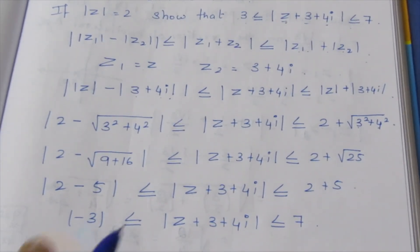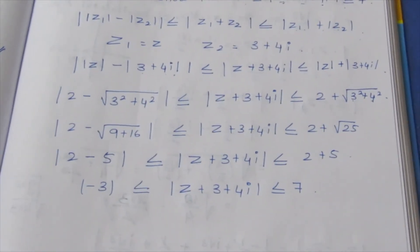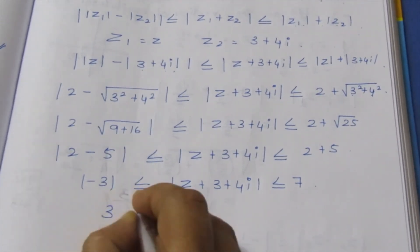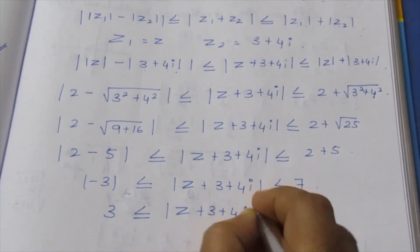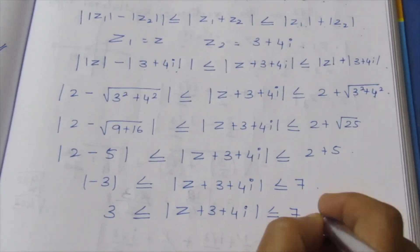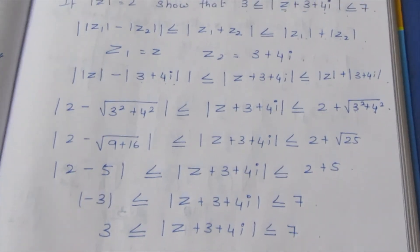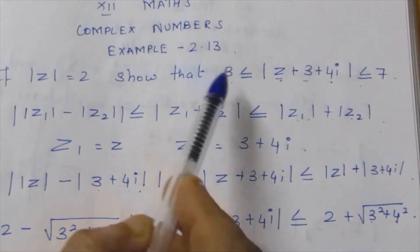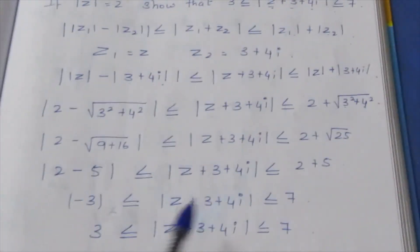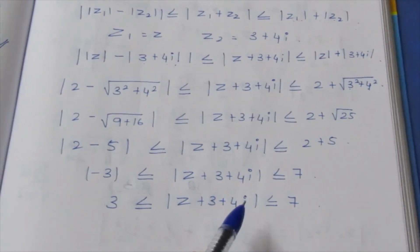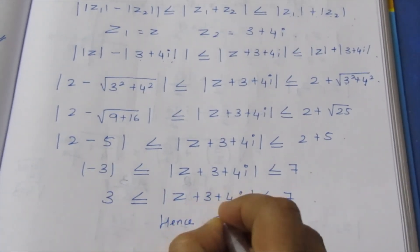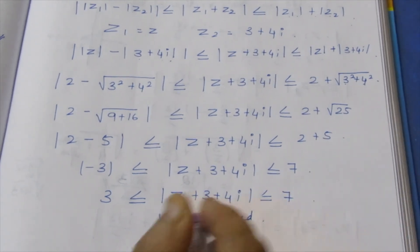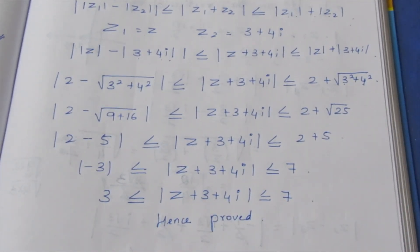Removing the modulus, so 3 less than or equal to modulus Z plus 3 plus 4i less than or equal to 7. This is what we set out to prove. So the proof is complete. Using the triangle inequality formula, we can make the solution easier. That is the solution. Thank you.